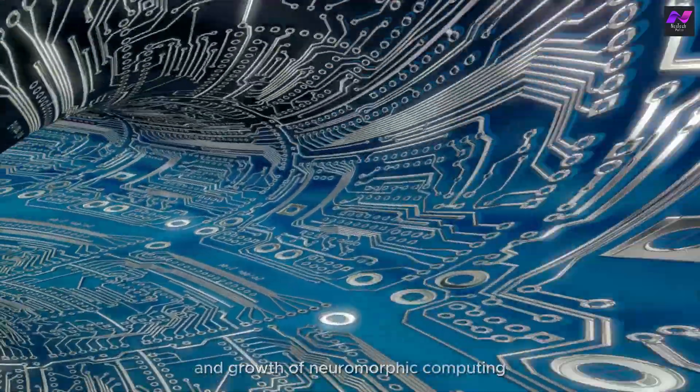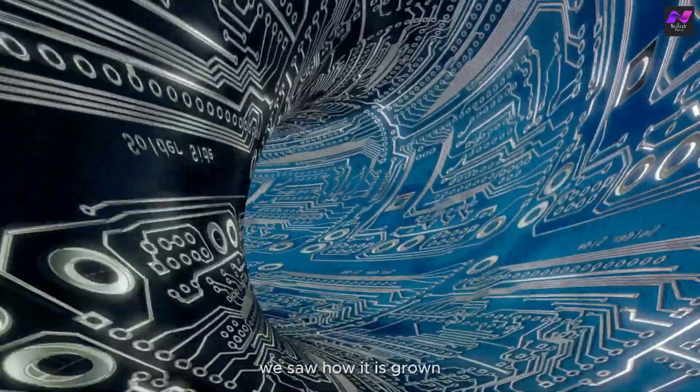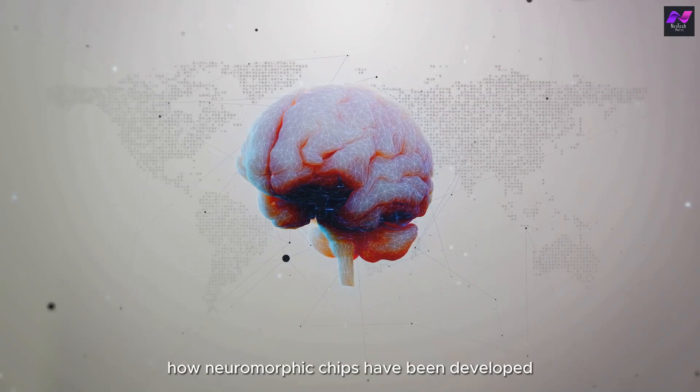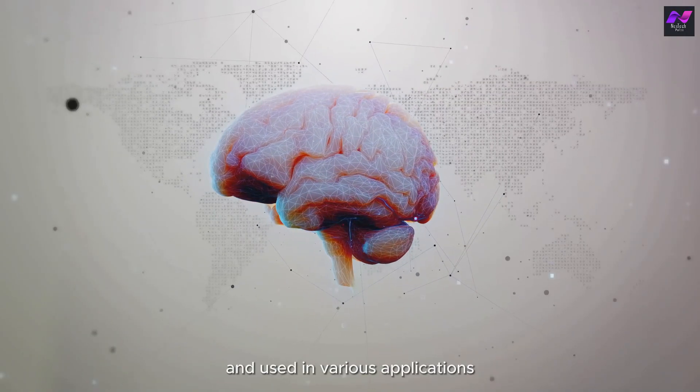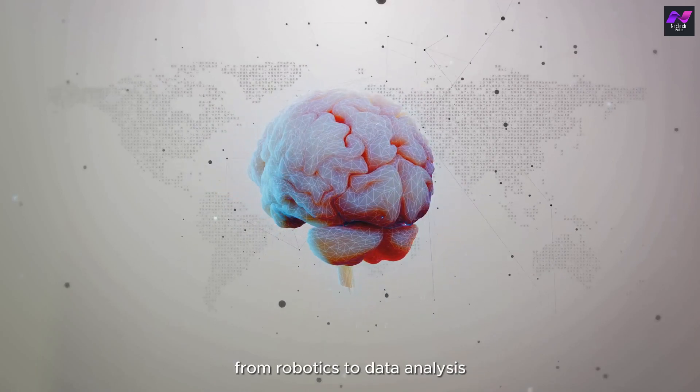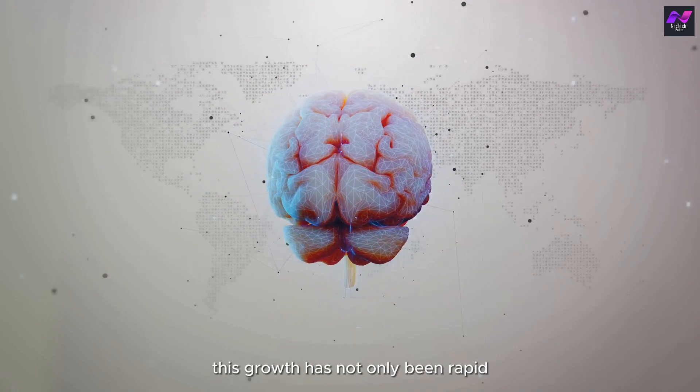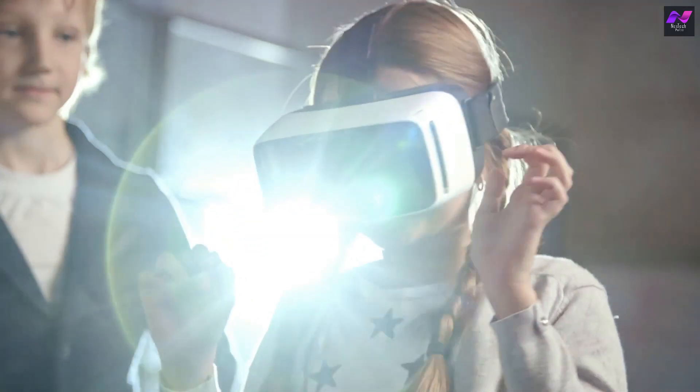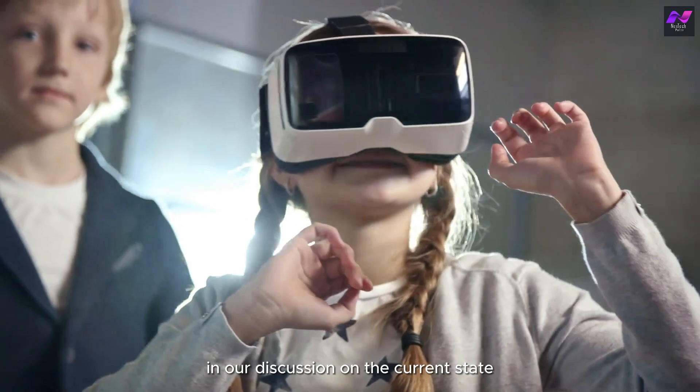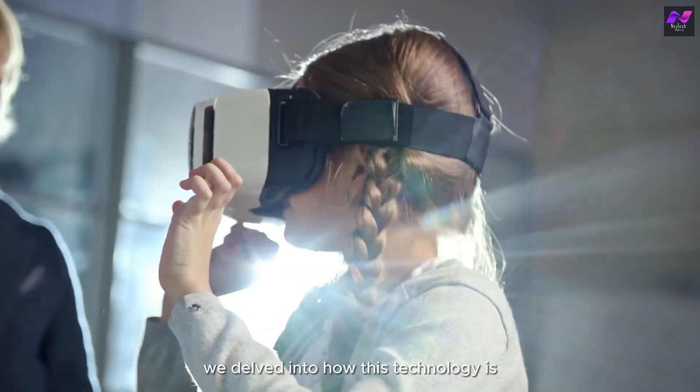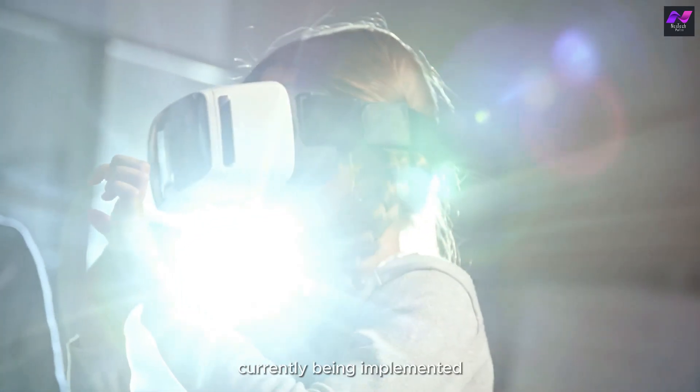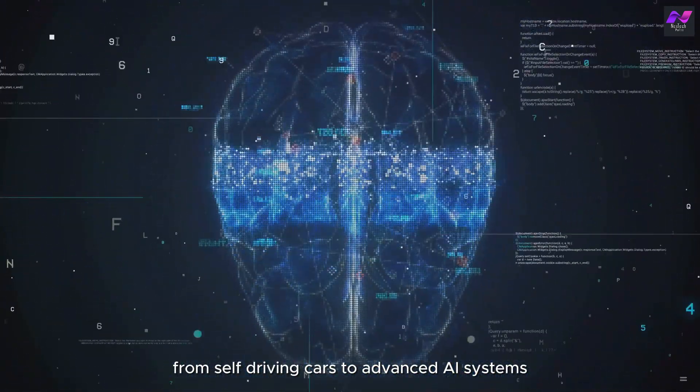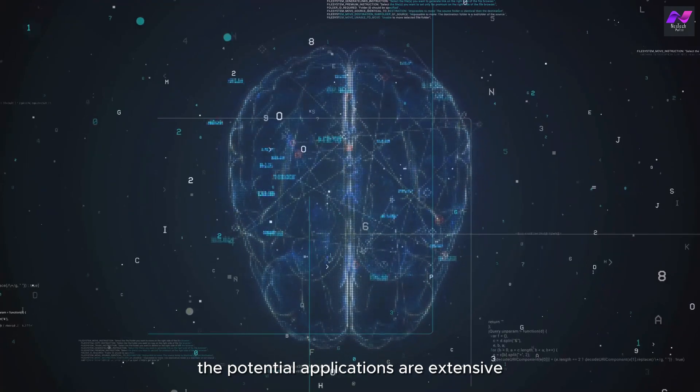As we trace the evolution and growth of neuromorphic computing, we saw how it has grown from being a theoretical concept to a tangible reality. We have witnessed how neuromorphic chips have been developed and used in various applications from robotics to data analysis. This growth has not only been rapid but also transformative, reshaping our understanding of what a computer can do. In our discussion on the current state and future prospects of neuromorphic computing, we delved into how this technology is currently being implemented and how it might shape our future. From self-driving cars to advanced AI systems, the potential applications are extensive and groundbreaking.